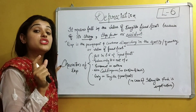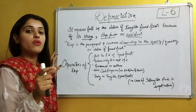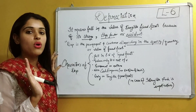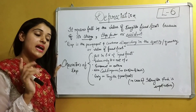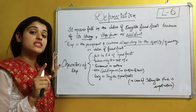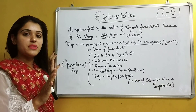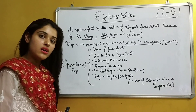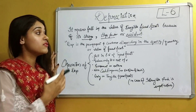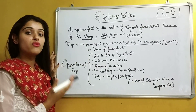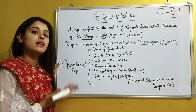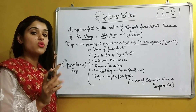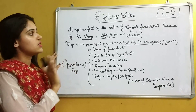Depreciation is the term used for reducing the value of the fixed assets of a firm, but only the book value of the fixed assets. Such fixed assets must be tangible in nature. Fixed assets are of two types — tangible and intangible. Reduction in the value of tangible fixed assets is only considered as depreciation.